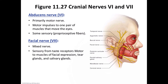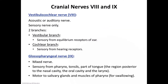Some fibers of the facial nerve function in the autonomic nervous system by stimulating secretions from the tear glands and certain salivary glands — specifically the submandibular and sublingual glands. Cranial nerve number eight is the vestibulocochlear nerve, also known as the acoustic nerve. These are sensory nerves that arise from the medulla oblongata and each has two distinct parts: a vestibular branch and a cochlear branch.